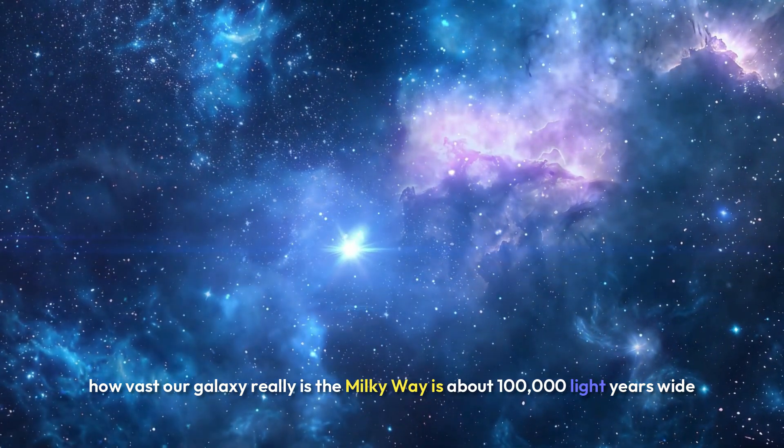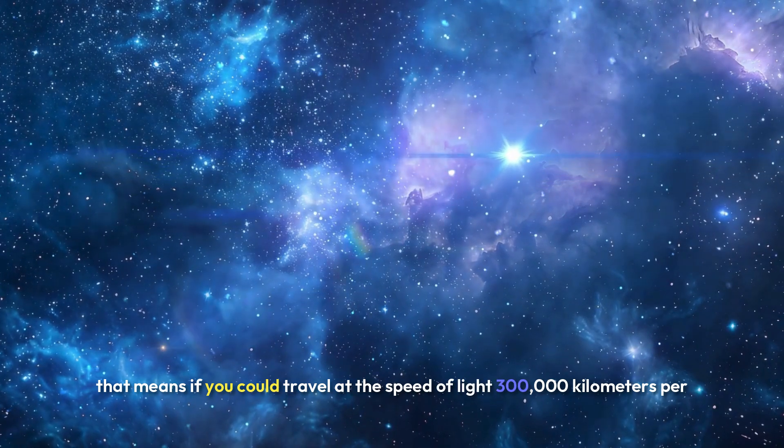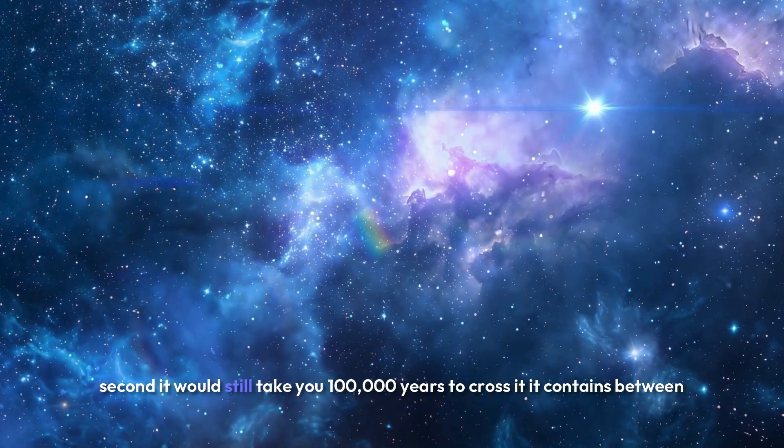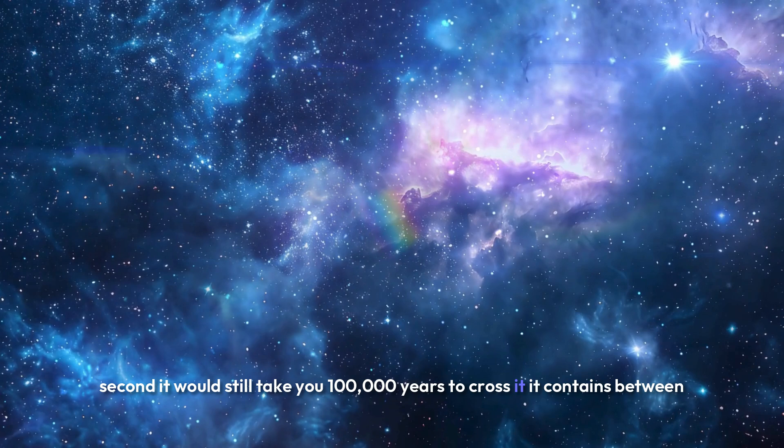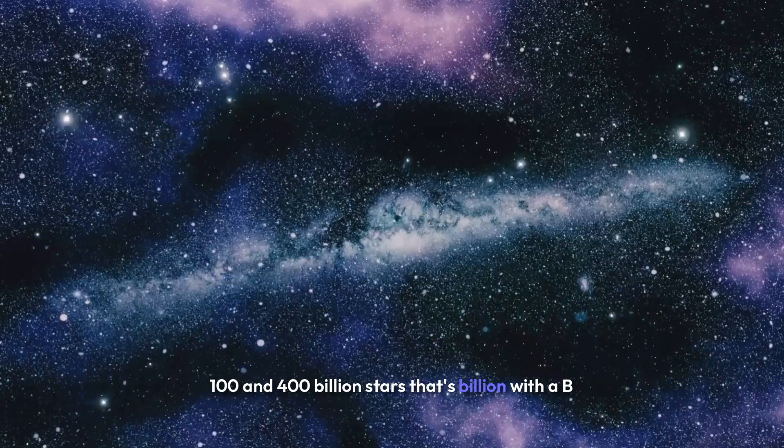The Milky Way is about 100,000 light years wide. That means if you could travel at the speed of light, 300,000 kilometers per second, it would still take you 100,000 years to cross it. It contains between 100 and 400 billion stars. That's billion, with a B.